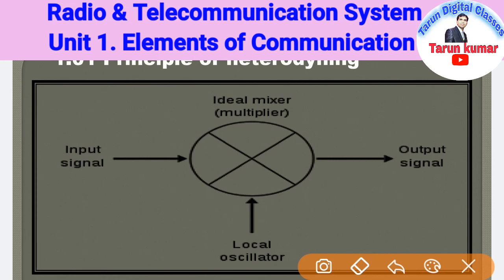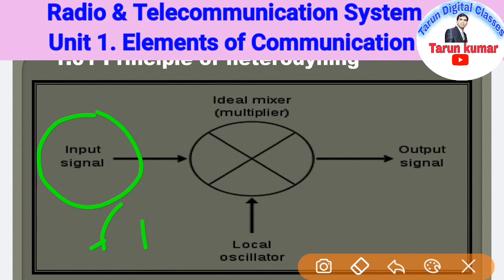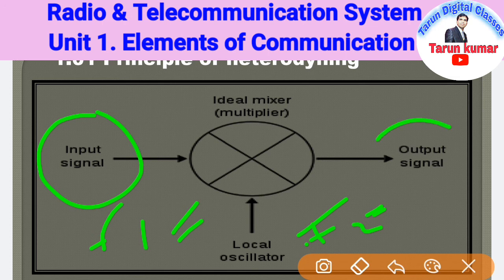Here we can see the process of mixing two signals. Basically, there is one input signal with frequency f1, and another frequency f2 which we get from the local oscillator. These two frequencies are mixed up, and after mixing, a new frequency is obtained at the output side, which is the output signal obtained with the help of the mixer and multiplier.